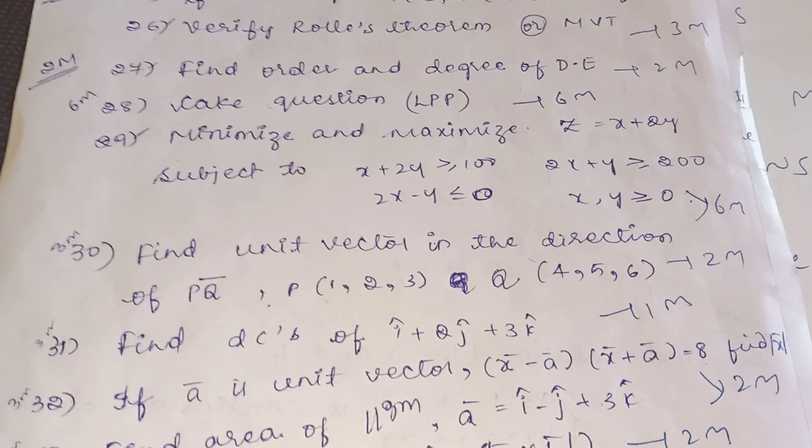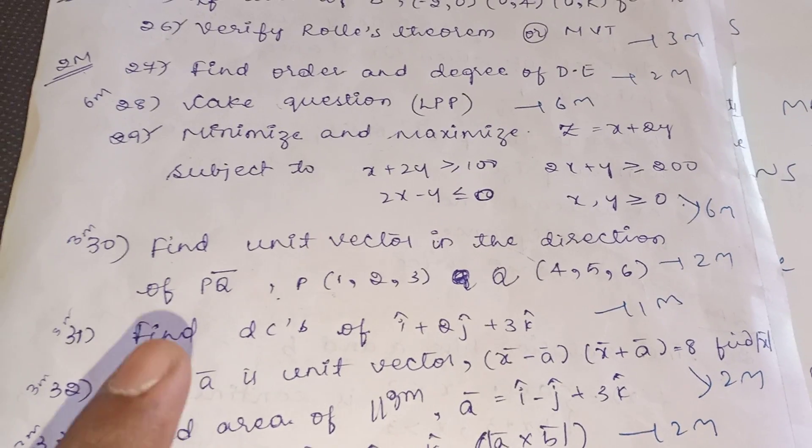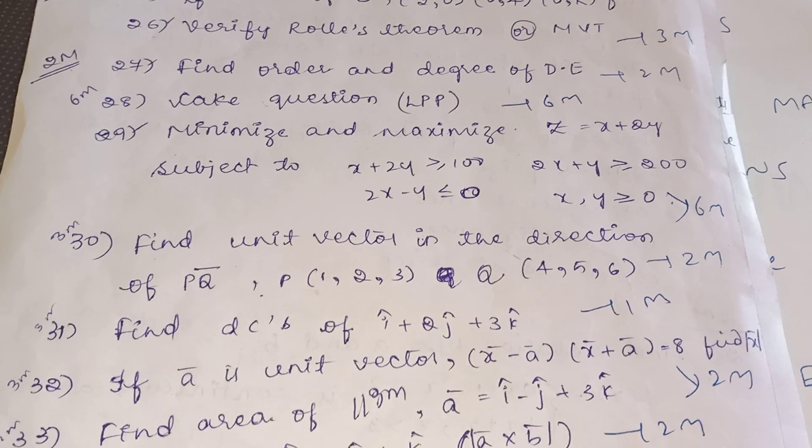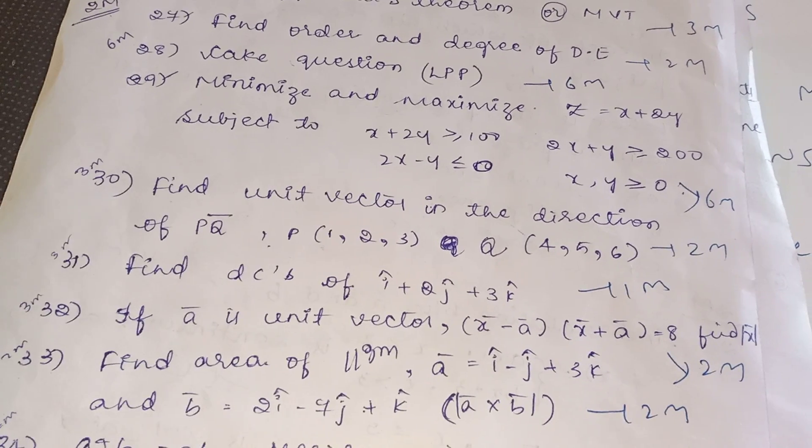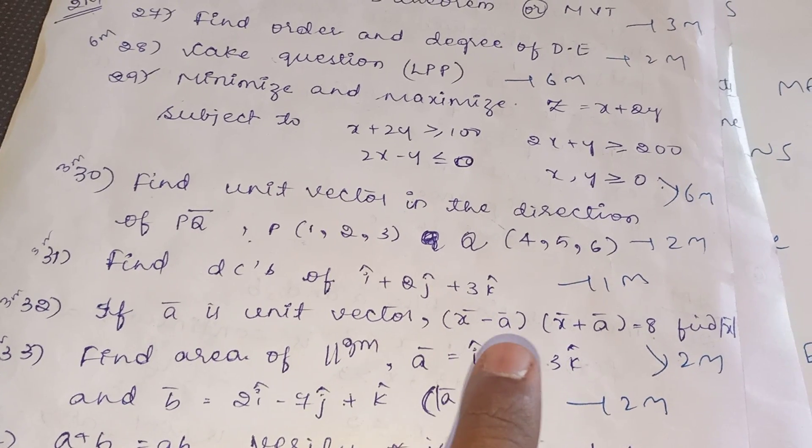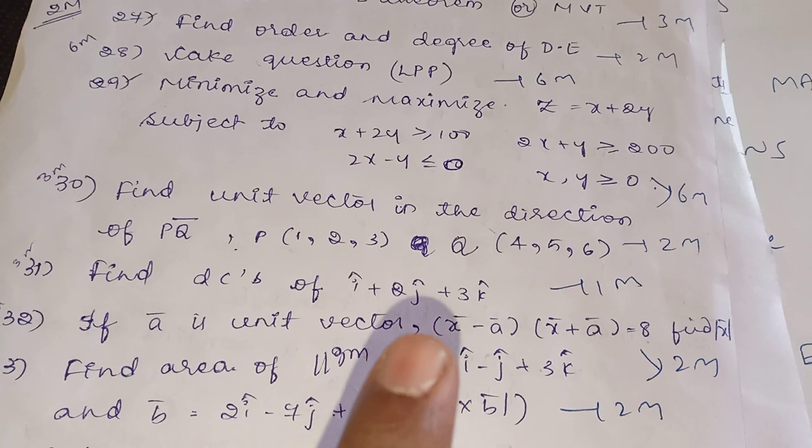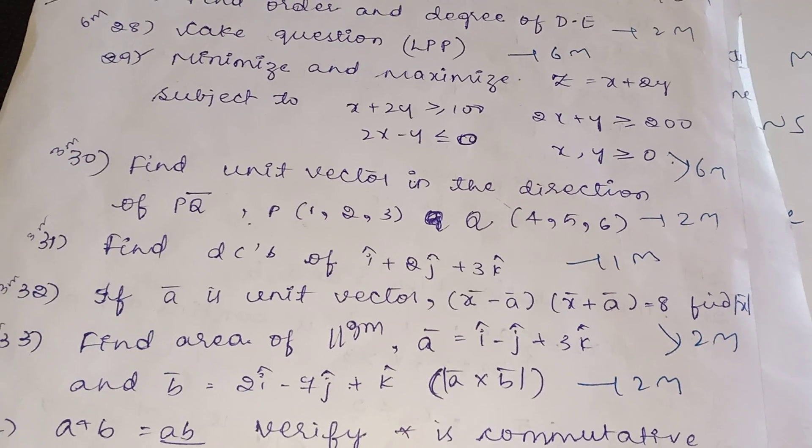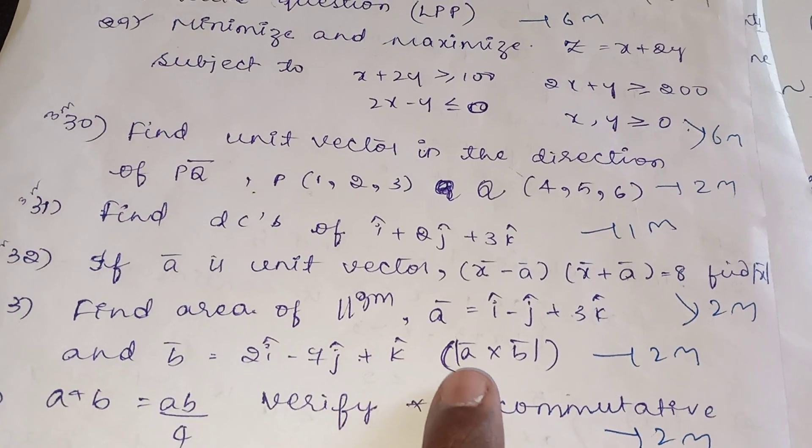If you go to two marks or three marks in the vector algebra, find the unit vector direction of PQ bar, P and Q is given. Formula you have: PQ cap = PQ bar / magnitude of PQ bar. And one mark they can ask, find the direction cosines. And then two marks: if a bar is unit vector, express a bar · x bar + a bar. Find modulus of x bar. We have an example and exercise of this type of model question. And find the area of parallelogram, this question must answer. The formula is magnitude of a bar cross b bar. This is for two marks.